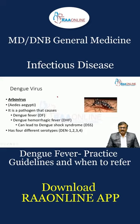Dengue virus is an arbovirus caused by the bite of Aedes aegypti. It can cause dengue fever, ranging from mild dengue fever to dengue hemorrhagic fever and dengue shock syndrome. There are four different serotypes: 1, 2, 3, and 4.